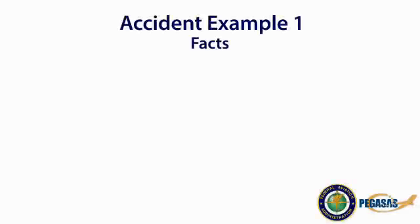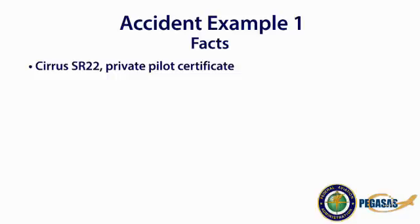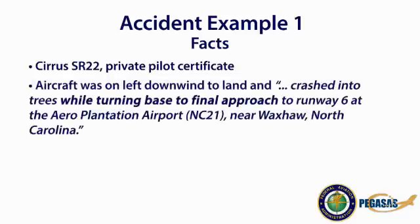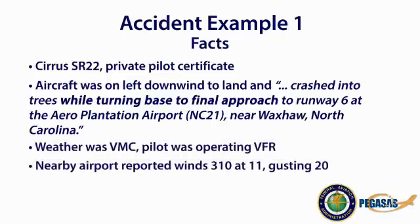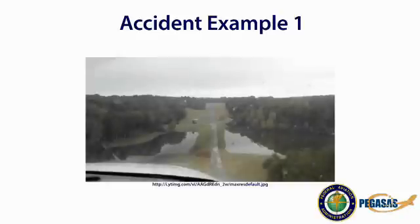In accident example number one, the facts are that it was a Cirrus SR-22 flown by a private pilot certificated individual. The aircraft was on left downwind to land and crashed into trees while turning base to final approach to runway 6 at the Arrow Plantation Airport near Waxhaw, North Carolina. The weather was VMC, or visual meteorological conditions, and the pilot was operating VFR. Winds at a nearby airport reported at 310 degrees at 11 knots gusting to 20 knots. The airport is described as tricky due to runway slopes and surrounding terrain.